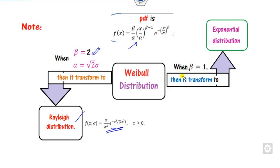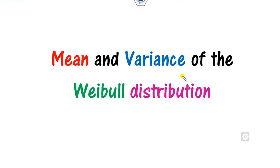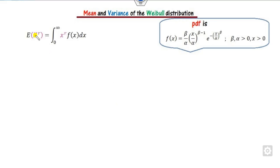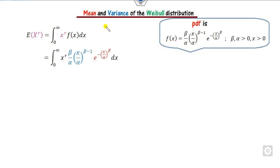Now that we are familiar with the Weibull distribution, we can see how to compute the mean and variance. Since the PDF is given, our target is to find E(x) and E(x²). We start with the general moment E(x^r). When r equals 1 it gives the mean, and when r equals 2 we can compute E(x²). Since x varies from 0 to infinity, we substitute the value of f(x) to get the integral expression.